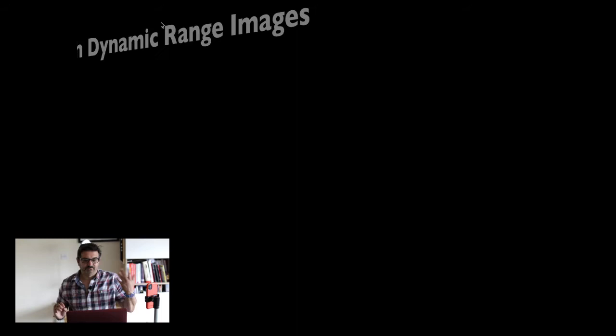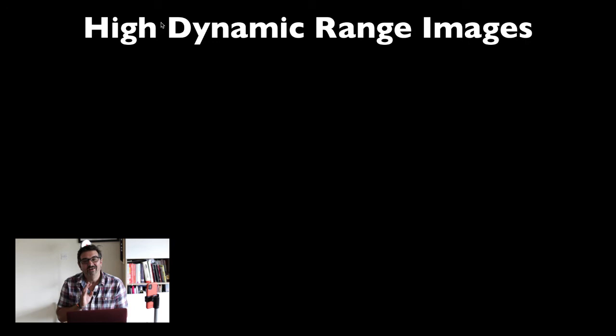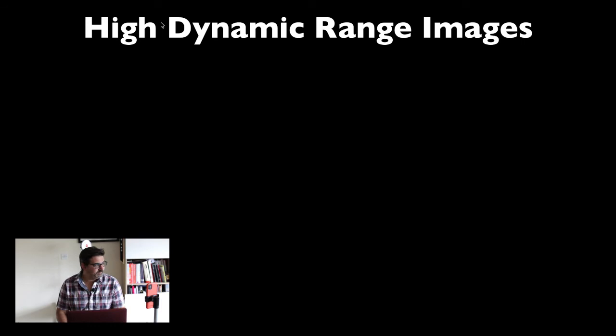Why would you do it? You want to get it right. Bracketing — at the risk of being crude — is basically a polite way of covering your backside. You're not happy with what the camera said, so you give it this and give it that. You want to make sure you're covering every eventuality and getting a half decent image out of it. High dynamic range is another reason people might use exposure bracketing or auto exposure bracketing.